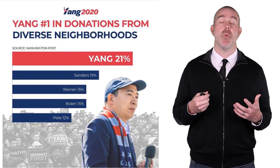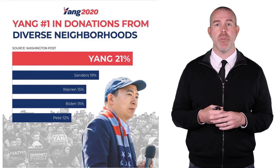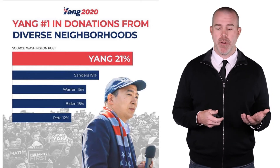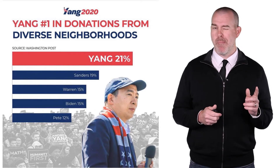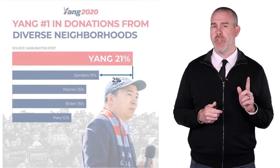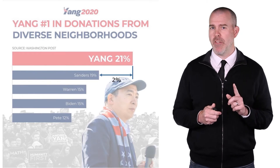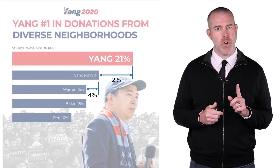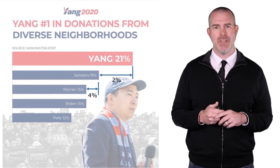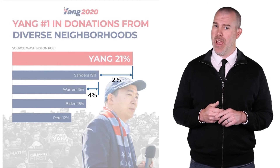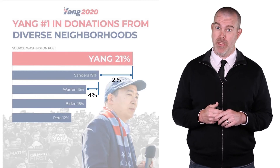Here's one from the 2020 campaign — Andrew Yang trying to show he has the most donations from diverse neighborhoods. His scale is a little wonky: he's two percent ahead of Bernie Sanders, but Bernie Sanders is four percent ahead of Elizabeth Warren, making for a funky y-axis — surprising for a guy who's supposed to be pretty mathy.